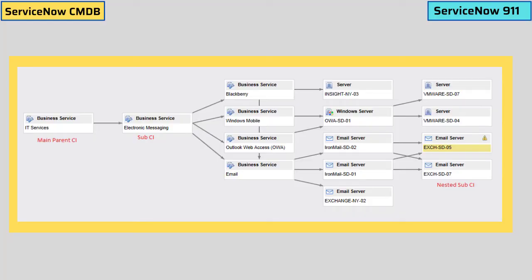Now you might ask why CMDB is important. Let's say you have a server that hosts a number of applications, and that server is connected to a database and to some high-priority services. If there is a glitch in the database, your services are getting impacted. How do you know which services and CIs are related to that database? In ServiceNow CMDB, you just go to the CI, click on the relationship view, and you can see all impacted CIs. So CMDB not only stores devices and CIs but also stores the relationships between them — and that relationship part is ultimately important for any organization.